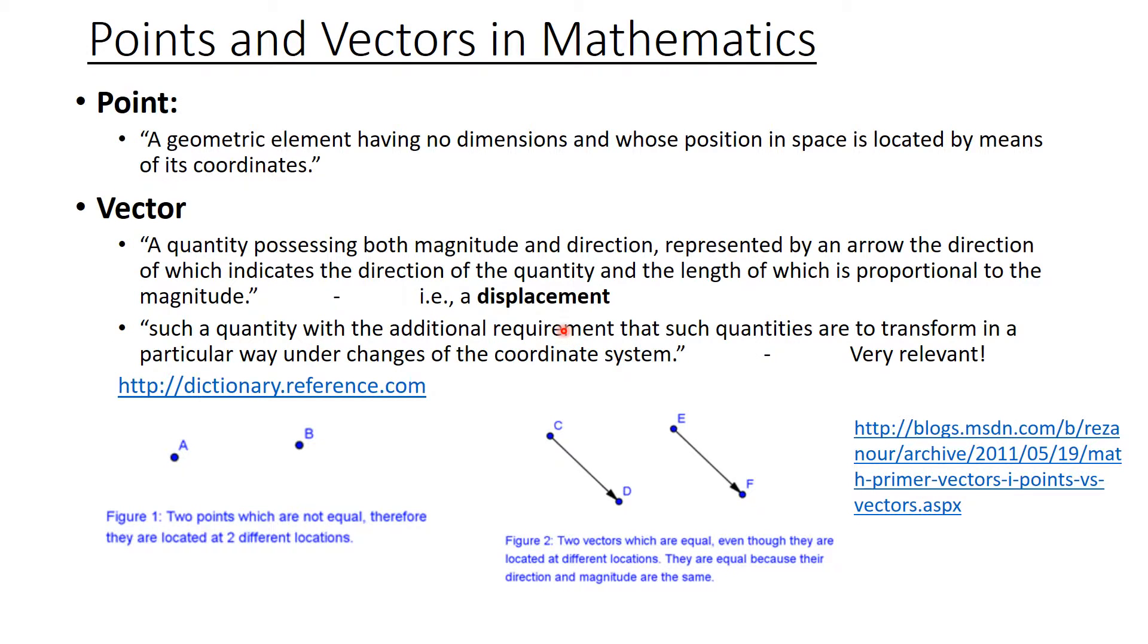Points and Vectors. Points are dimensionless and they may be located in space from their coordinates. Vectors, however, do not have a position. They are different. They represent a displacement. So these two vectors here are equal, even though they are at different locations, whereas these two points are completely different.